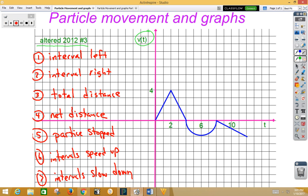Let's start with number 1. We want to know the interval where the particle is traveling to the left. The particle will travel to the left when velocity is negative.